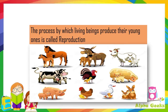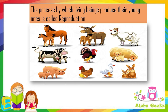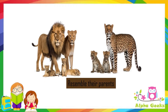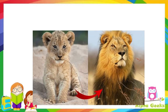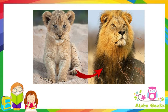The process by which living beings produce young ones is called reproduction. It is the process by which new living beings are produced which resemble their parents. Animals reproduce so that life on earth can continue. All animals grow into adults.